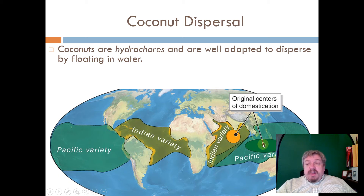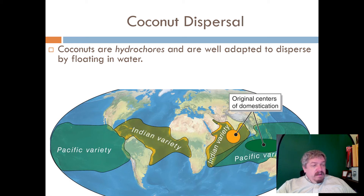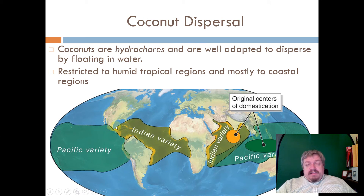Why didn't coconuts spread further south? It gets too cold or too dry — they need to be coastal and at the right temperature. The Indian Ocean variety had a large gap preventing natural spread to the Pacific coast of the Americas, but the right humidity and coastal conditions were there. That gap was bridged because humans brought coconuts with them — specifically, Spanish explorers carried them to grow as food.